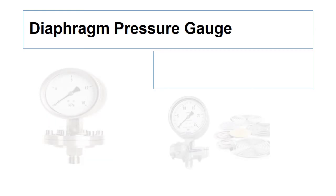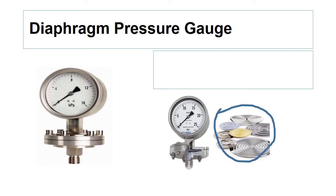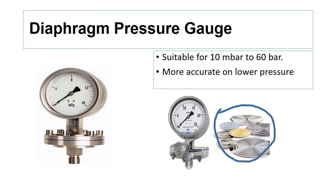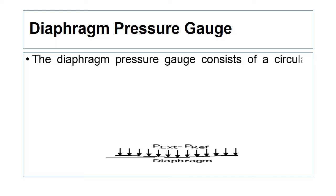The next pressure gauge is the diaphragm type pressure gauge. In this gauge, the measuring element is a diaphragm. Diaphragm type pressure gauges are suitable for a pressure range of 10 millibar to 60 bar. Diaphragm gauges are more accurate at lower pressures compared to Bourdon tube pressure gauges. The diaphragm pressure gauge consists of a circular membrane or diaphragm made from sheet metal of precise dimensions.